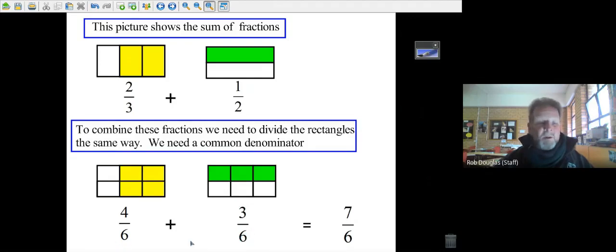Once you've got a common denominator, all you have to do is write down the common denominator. You can see there are four yellow ones and three green ones. Four plus three is seven.